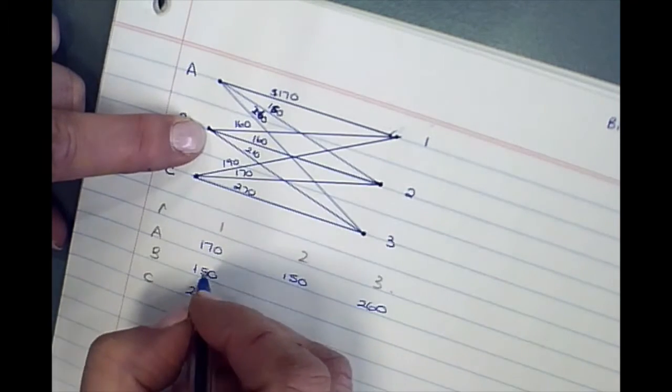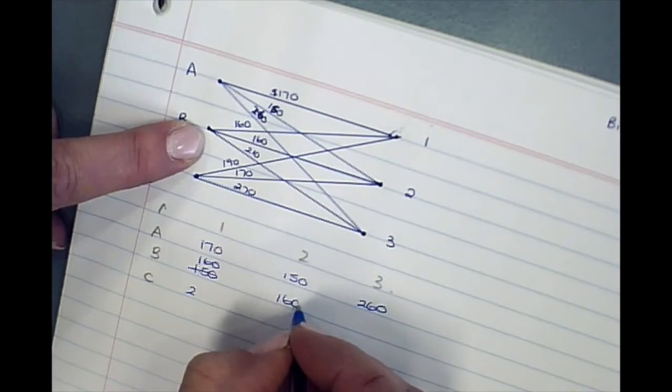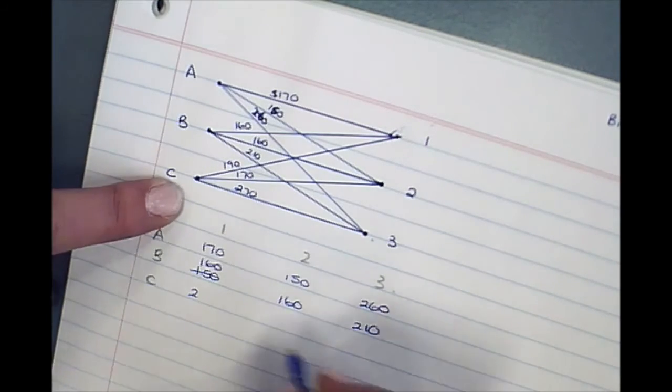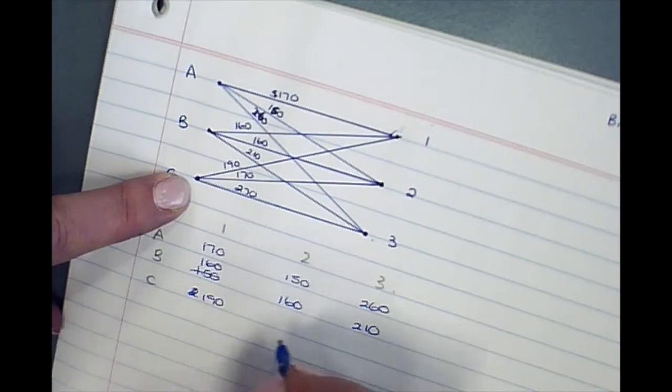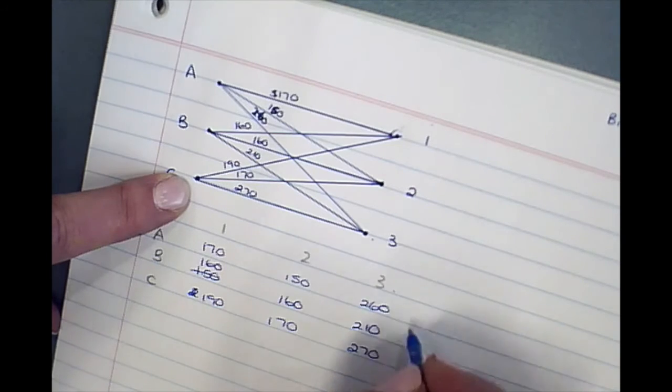B up to 1 is 160, B to 2 is 160, B to 3 is 210, C to 1 is 190, C to 2 is 170, and 270 that way.